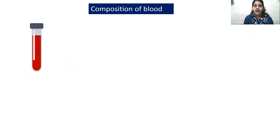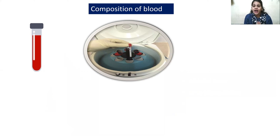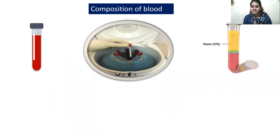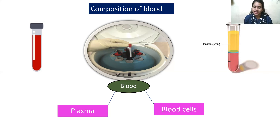Now let us go into more detail and understand the composition of blood. In the image you can see a test tube filled with a red color fluid. To see the components of blood, I need to put this test tube into a machine and allow it to centrifuge. So after centrifugation, what I can see in the test tube consists of two important things: plasma and blood cells. So blood consists of two important components — the first is plasma and the second is blood cells.